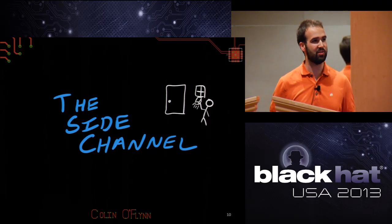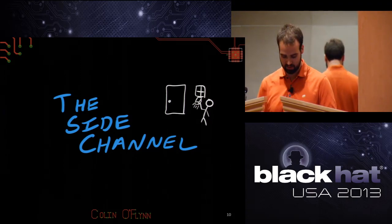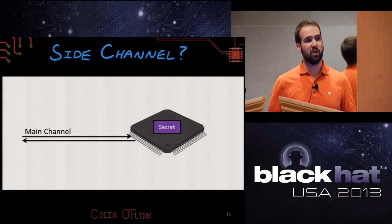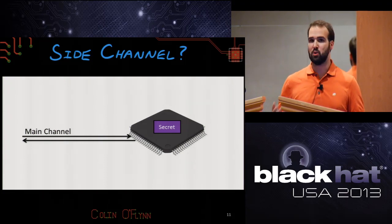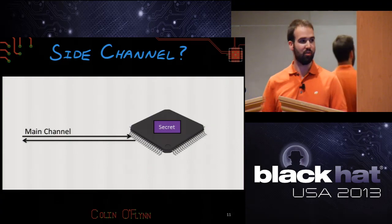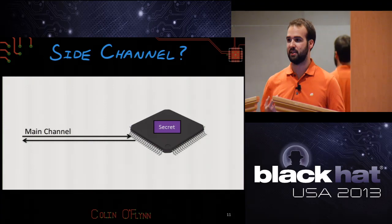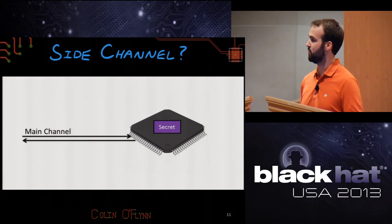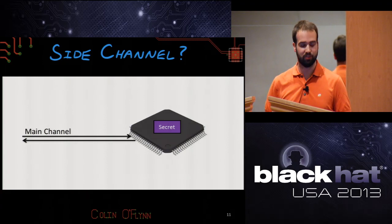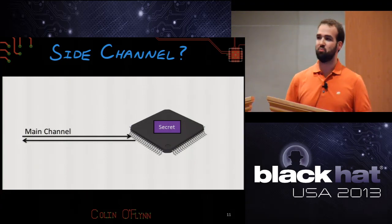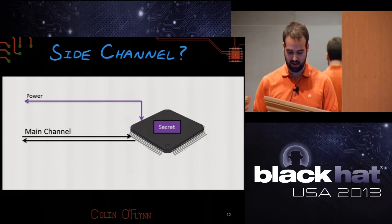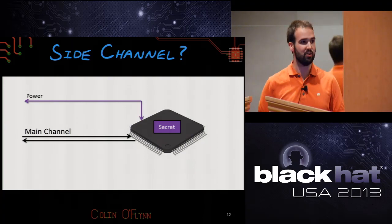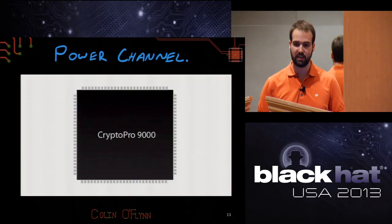Now I'll introduce what a side channel is. We have a crypto device — a smart card, an embedded device with a bootloader. We have a channel; we can send it a request, say 'please encrypt this,' and it will respond. We can cause the device to run an encryption operation all day and we're not going to figure out what the secret is inside it. But it has other channels — other communication methods it didn't intend to broadcast — and it is telling you something about the secret inside it. What we use is the power channel.